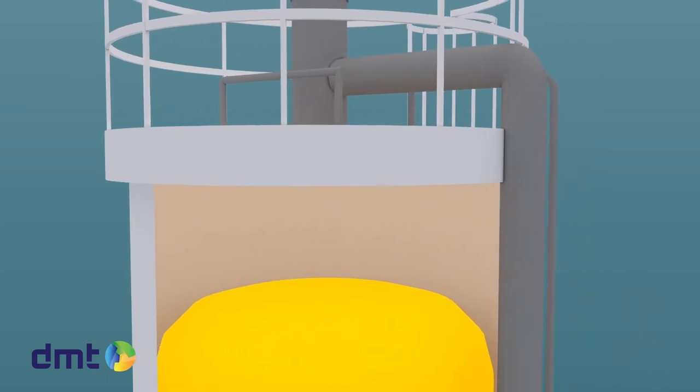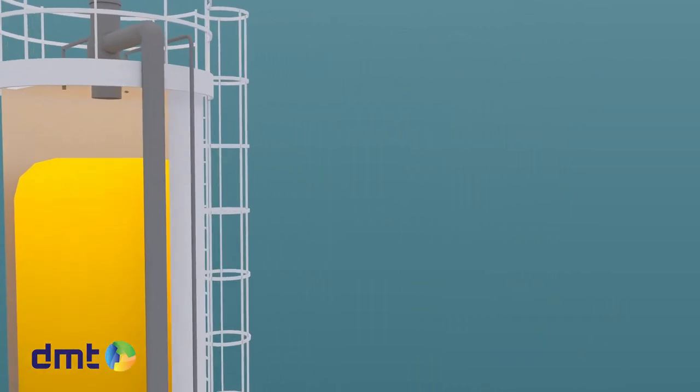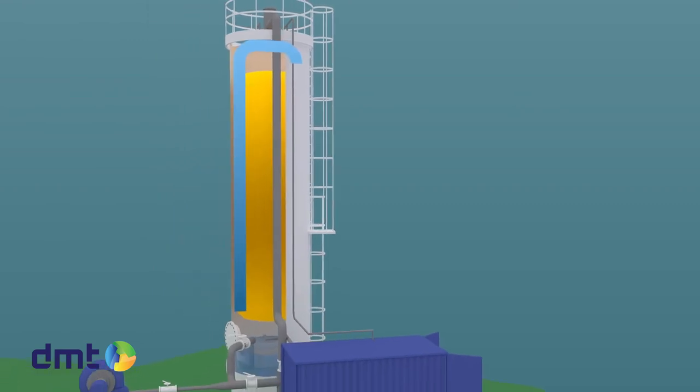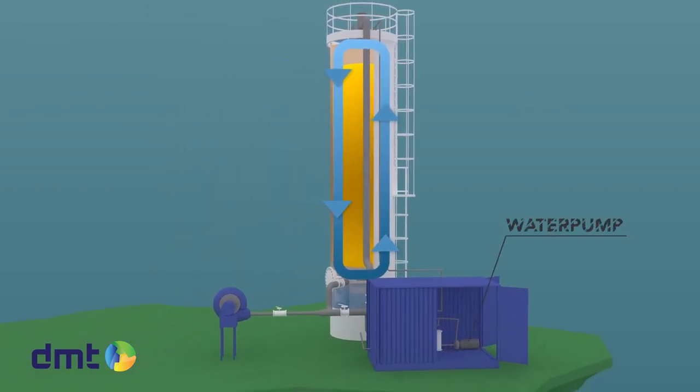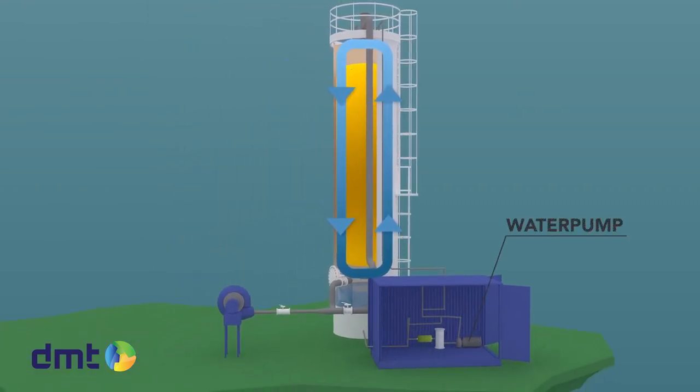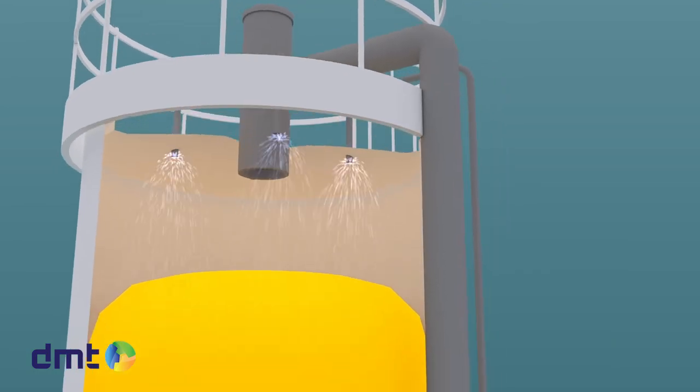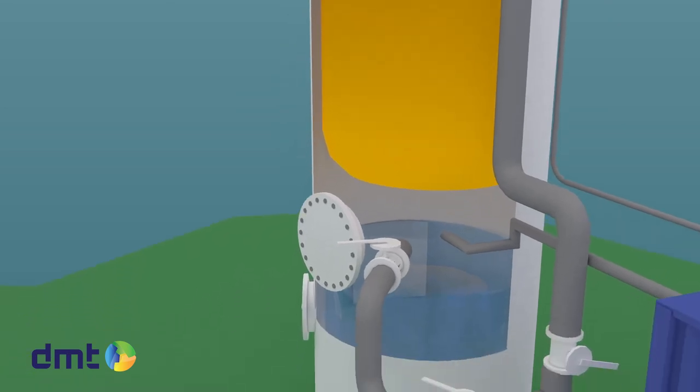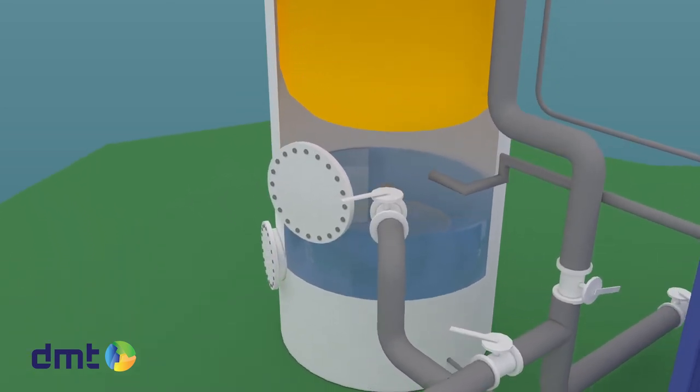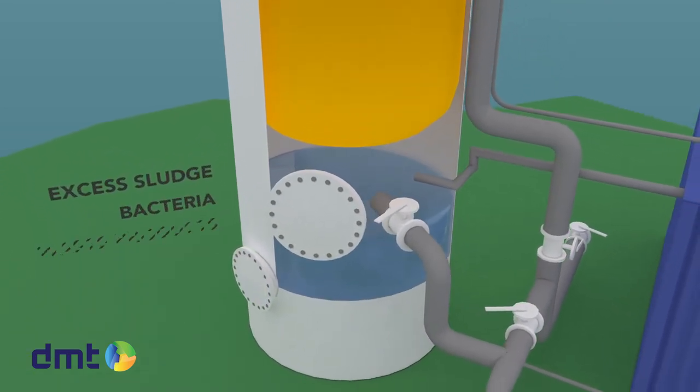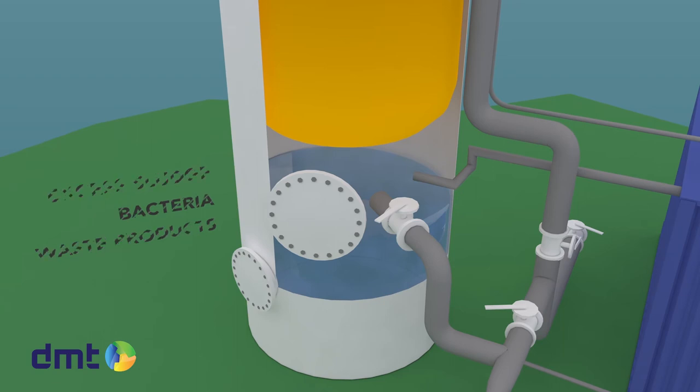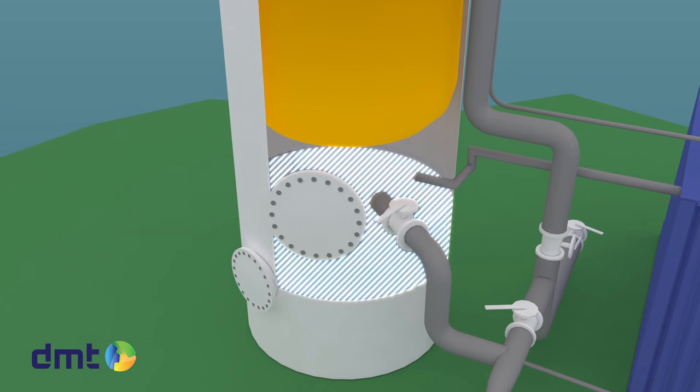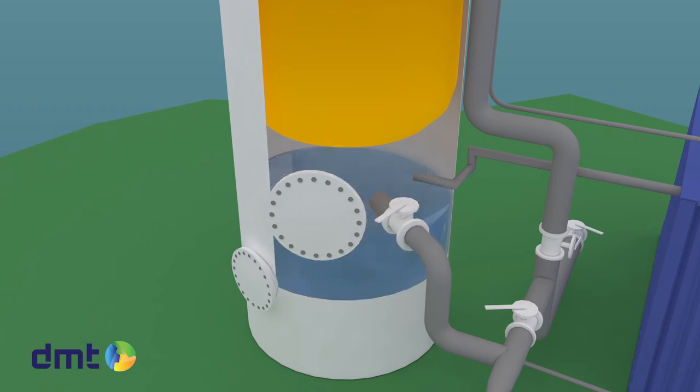Since bacteria are living organisms, they require water to sustain them. Therefore, water is circulated through the packing material by a circulation pump. The water is sprayed on top and trickles down through the packing. The water also functions as a sewage system to discharge excess sludge or bacteria and waste products. The water is collected in the buffer at the bottom of the system where it can be recirculated again.